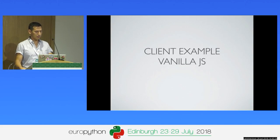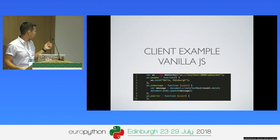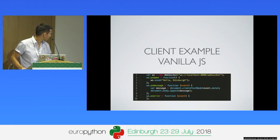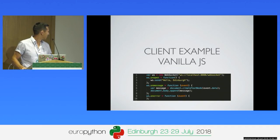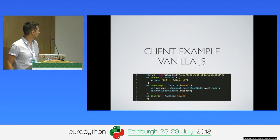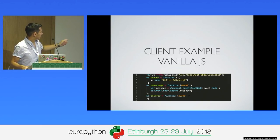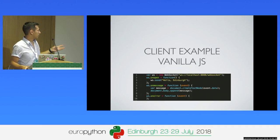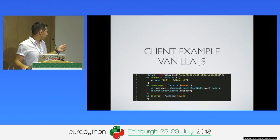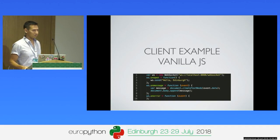Here is a vanilla JavaScript example of what you need to do to establish a WebSocket connection with the backend — no libraries at all, pure JavaScript. You create a WebSocket connection to the host, in this case localhost. Then you define three callbacks: what to do on open when the connection is established, what to do when you get a message — in this case, appending it to the document body — and what to do on error. These are 10 lines to use WebSockets. Really, really easy.